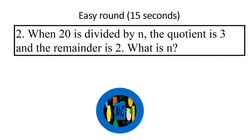When 20 is divided by n, the quotient is 3 and the remainder is 2. What is n?